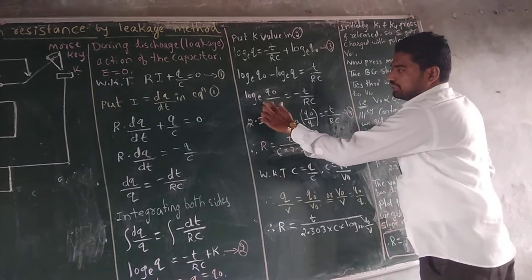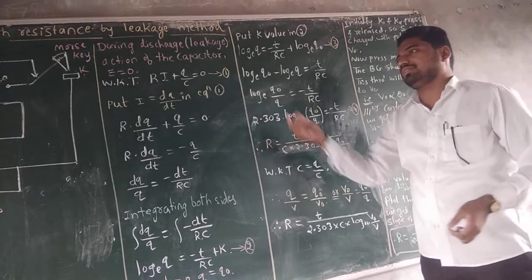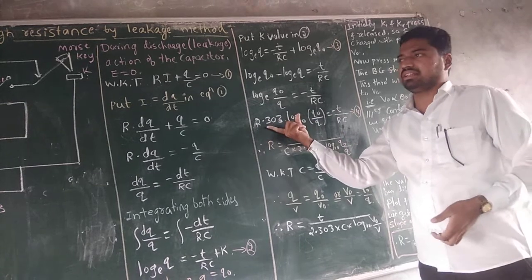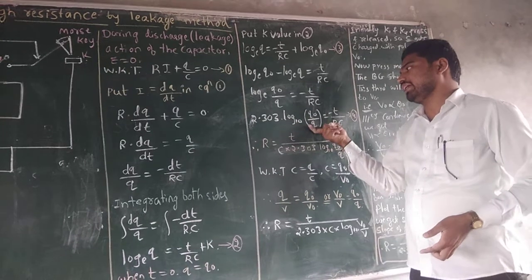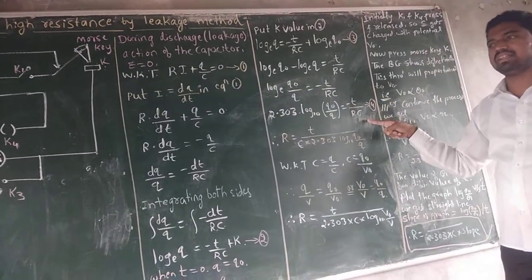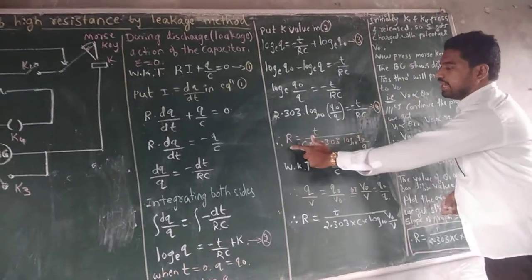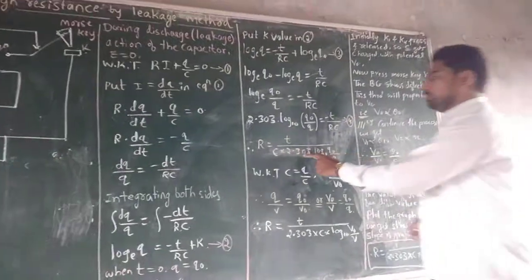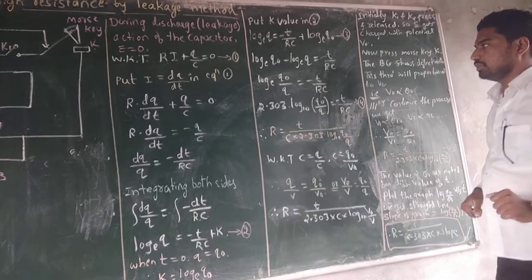Since the base here is e, to convert to base 10 we multiply by 2.303. Therefore 2.303 times log(q-naught / q) to the base 10 equals minus t divided by RC. This is equation number 4. Rearranging, R equals t divided by 2.303 times C times log(q-naught / q).